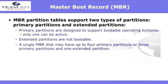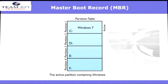The master boot record table supports two types of partitions: either primary partitions or extended partitions. An important note here is that the extended partition is not bootable. Here's a look at active partitioning in Windows. You see the common C, which is where the Windows operating system is held, and then other partitions D, E, and F, where alternate data can be stored. However, you see only one partition is identified as active.